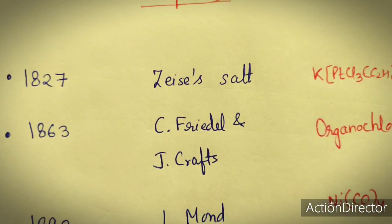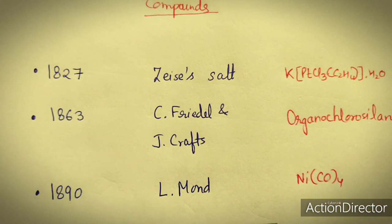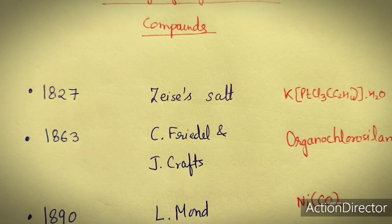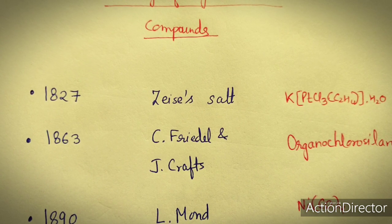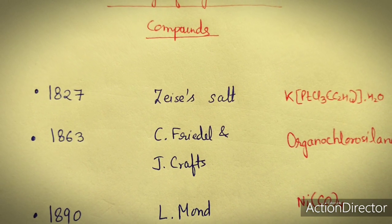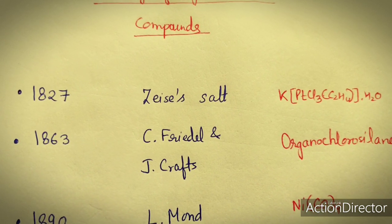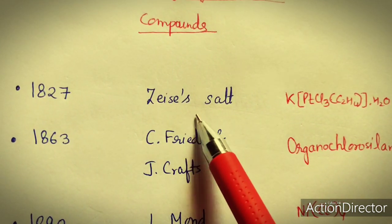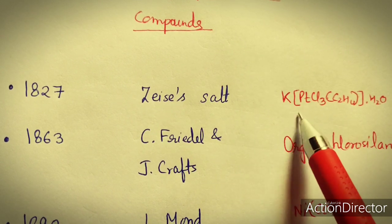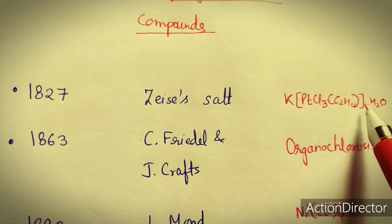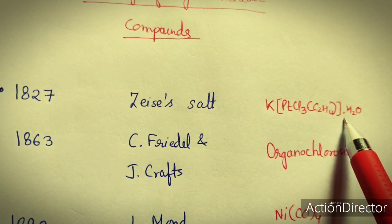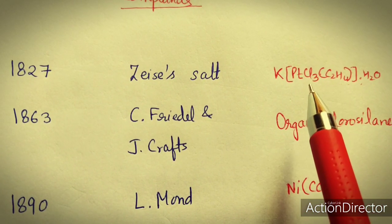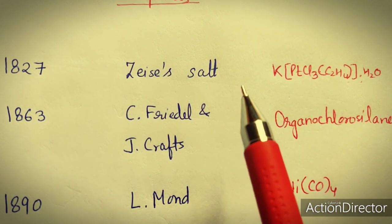The first important organometallic compound is Zeise's salt, discovered in 1827 — this is when organometallic chemistry begins. Its general formula is K[PtCl₃(C₂H₄)]·H₂O, making it the first organometallic compound to be discovered.